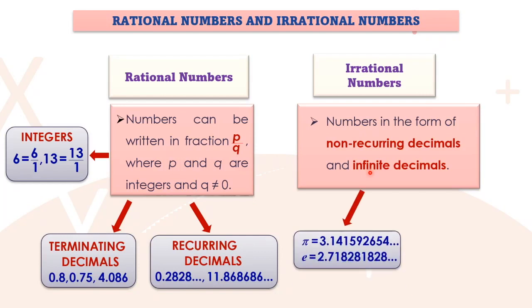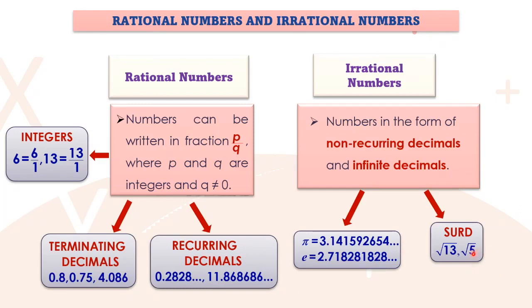Examples to distinguish surds from non-surds: square root of 3 simplifies to √3 and gives a non-recurring, infinite decimal — this is a surd. Square root of one-quarter simplifies to one-half = 0.5 (terminating decimal) — this is NOT a surd. The cube root of 11 in simplest surd form gives an infinite non-recurring decimal — this IS a surd. Cube root of 27 = 3 (a whole number) — NOT a surd. The fifth root of 3 gives 1.24573... (infinite, non-recurring) — this IS a surd. For notation: we say 'set X order N', e.g., the fifth root of 3 is 'set 3 order 5'.